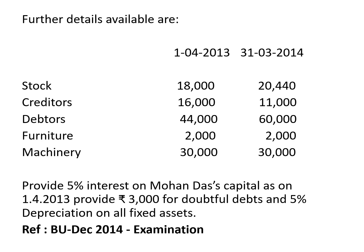Machinery: 30,000 opening and 30,000 closing — both balances are the same, so there is no purchase in between. Opening machinery goes to the opening statement of affairs; closing machinery goes to the balance sheet where we will have to deduct depreciation at 5%.